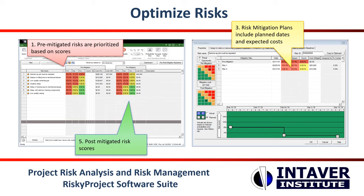The mitigation waterfall chart includes expected changes to probability or impact, date of completion, cost, owner, etc. The expected changes to the risk are visualized in both the waterfall chart and the pre- and post-mitigated risk cubes. The post-mitigated risk score is then presented in the risk register. The mitigation plans with associated activity and cost need to be added to the schedule, and risk assignments are then modified to the post-mitigated status.